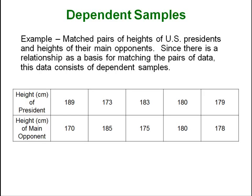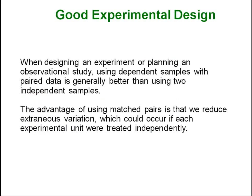So you can see how there is a logical reason why you would match president to opponent rather than just having an entire set of presidents and an entire set of their opponents. When designing an experiment or planning an observational study, using dependent samples with paired data is usually better; it gives you a stronger result than using two independent samples.